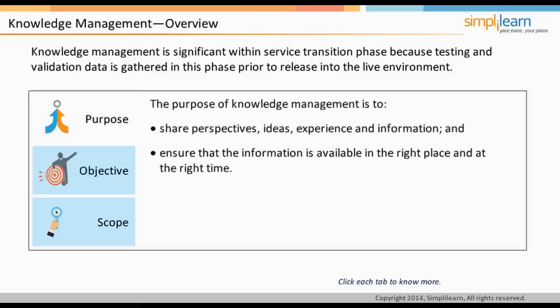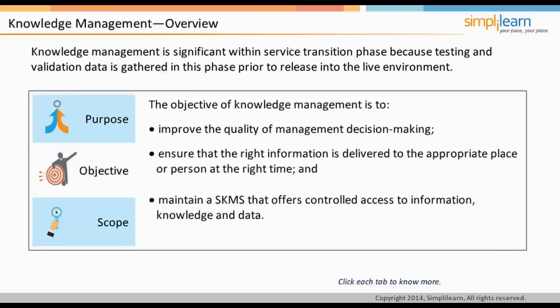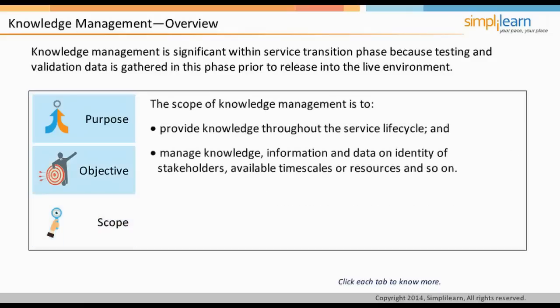The purpose of knowledge management is to share perspectives, ideas, experience, and information; ensure information is available at the right time and place; help take informed decisions; and improve efficiency by minimizing the need to rediscover knowledge. The objectives are to: improve the quality of management decision-making by ensuring secure and reliable information is available for the service lifecycle; ensure the right information is delivered to the appropriate place or person at the right time; and maintain an SKMS that offers controlled access to information, knowledge, and data appropriate for each audience. The scope of knowledge management is to provide knowledge throughout the service lifecycle and manage knowledge, information, and data on stakeholder identity, available timescales or resources, and acceptable levels of risk and performance expectations.